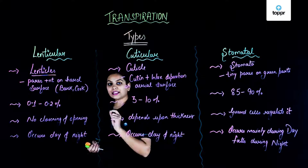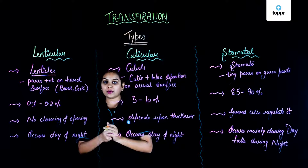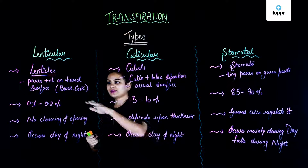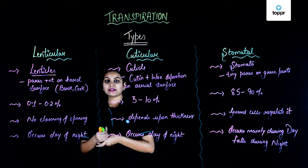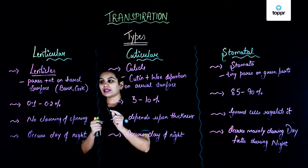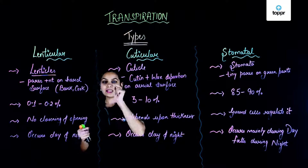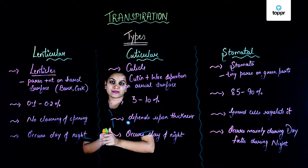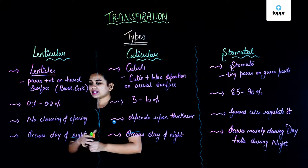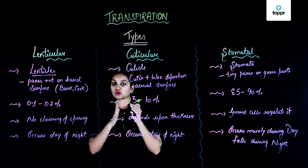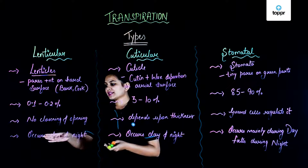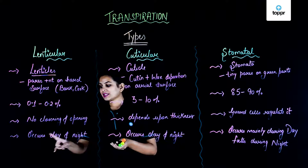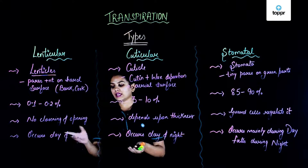Lenticular transpiration takes place with the help of lenticels. These lenticels are tiny pores present on the hard surface of the aerial parts of a plant — such as cork or bark in old trees, or the hard outer surface of fruits. These lenticels help in the release of water. They comprise 0.1 to 0.2% of total transpiration, which is almost negligible. Since they do not open or close and have no guard cells, transpiration through lenticels can occur day and night.